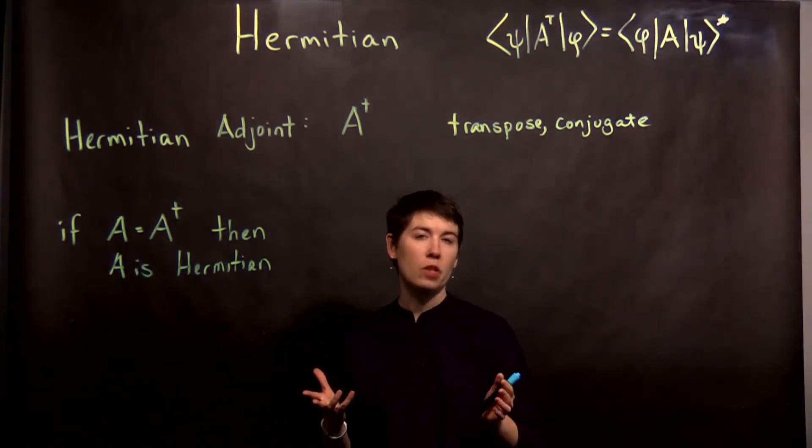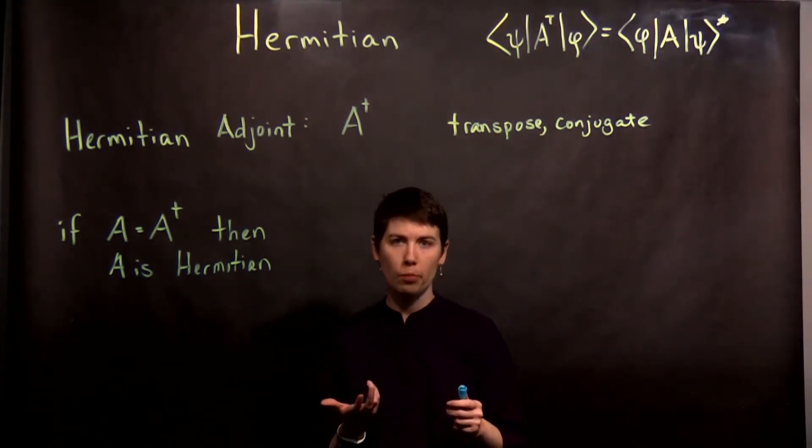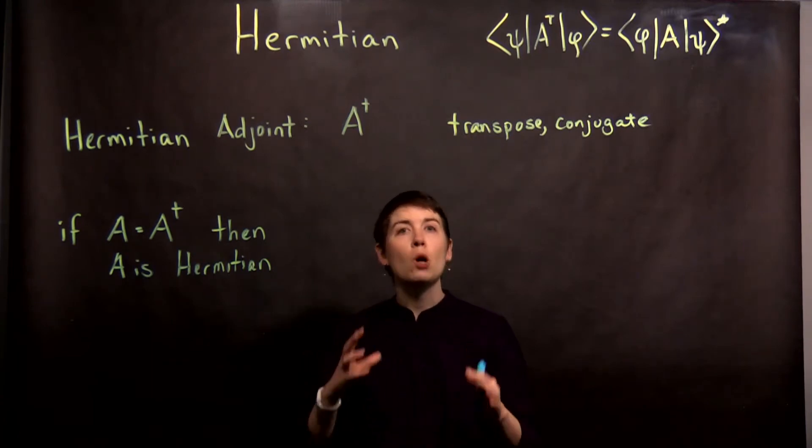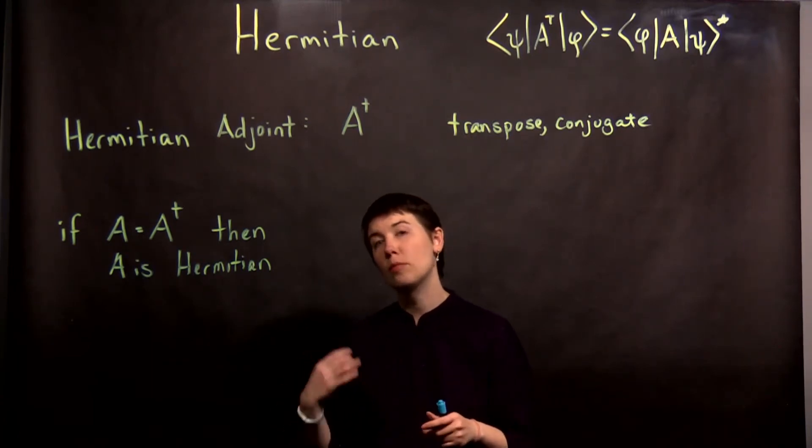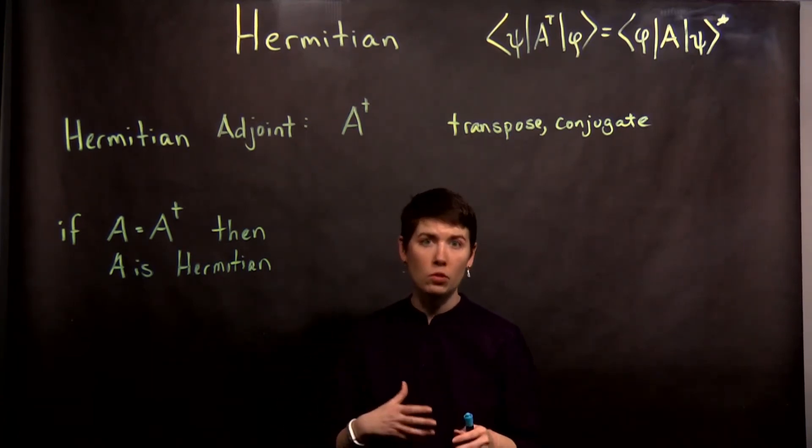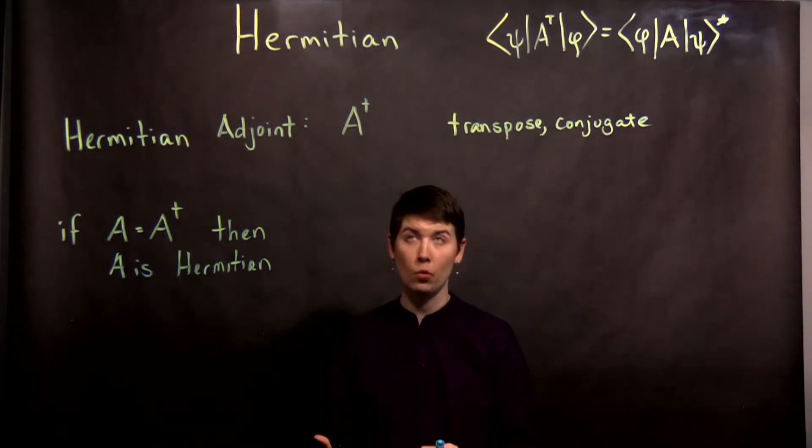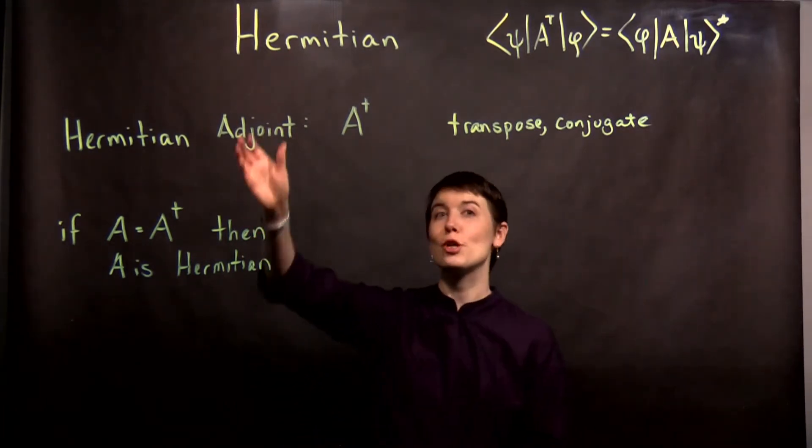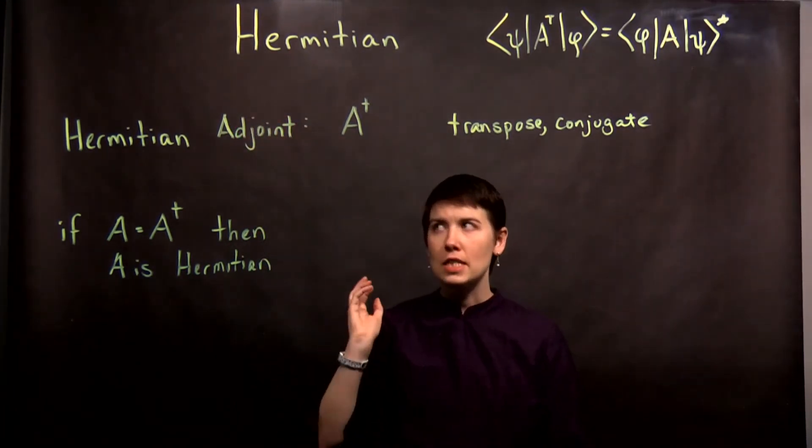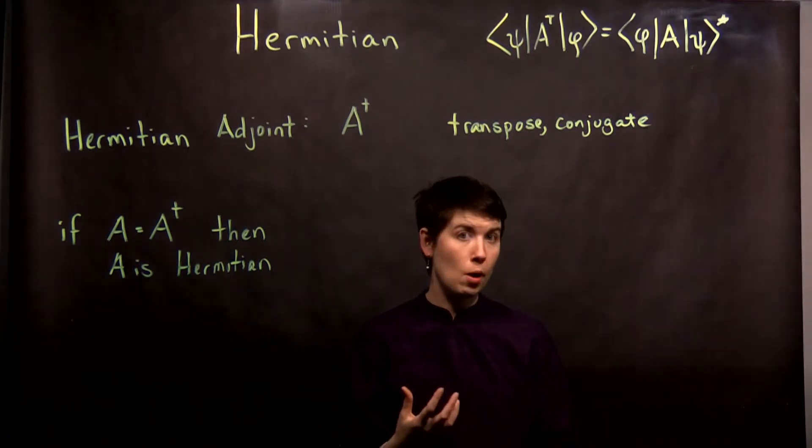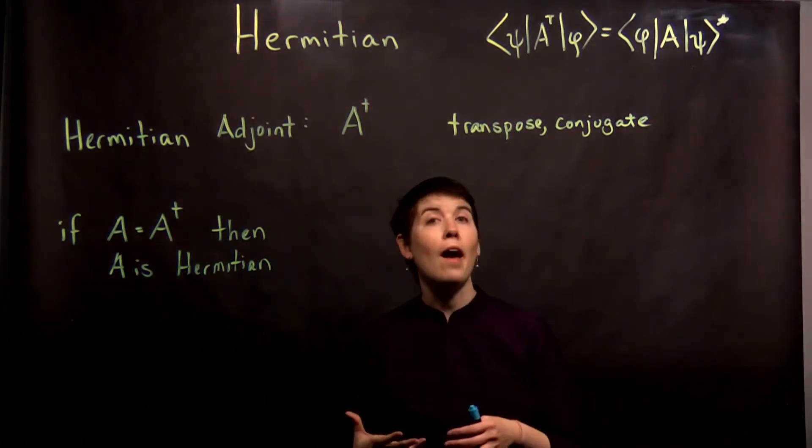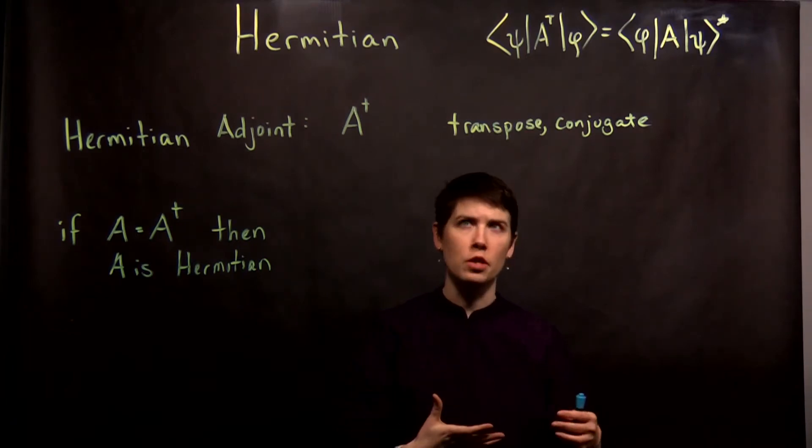There's a new term that's going to be really important later in the book, and so it's worth really pausing and understanding what this means from a mathematical point of view and what the physical interpretation or implication is going to be. And the word is Hermitian, and the idea is that we're going to talk about a property that some matrices have of being Hermitian.